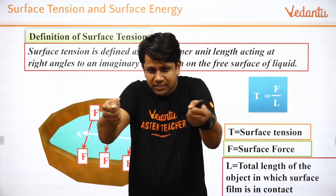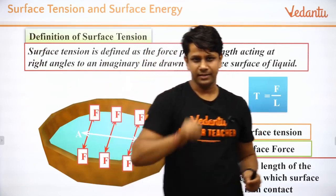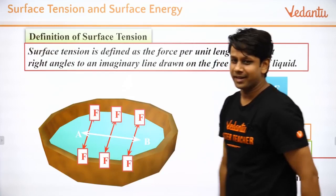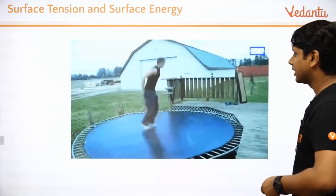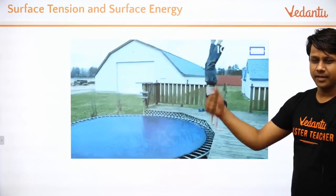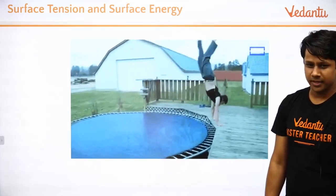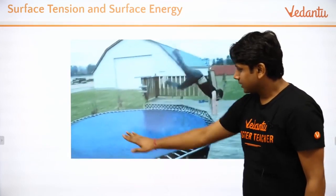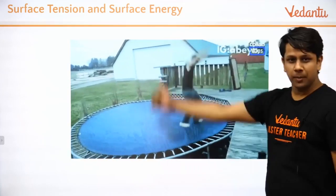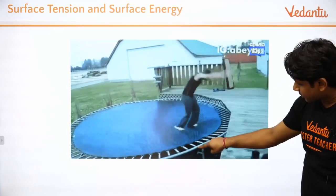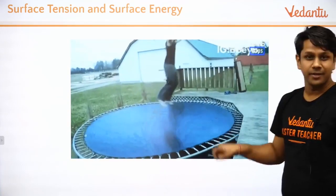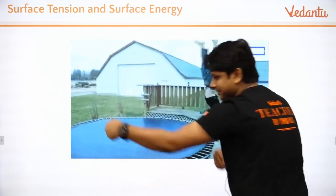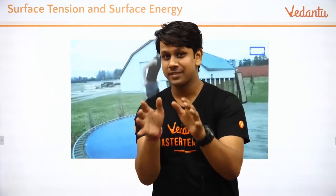Surface tension is holding the surface stretched like this. Let's feel this. The best example of a stretched membrane is a trampoline — that talented person has done a handstand on it after jumping. The surface of a trampoline is a membrane with springs attached. When you try to push down on it, the springs apply forces to keep it stretched, just like the surface tension in a liquid.